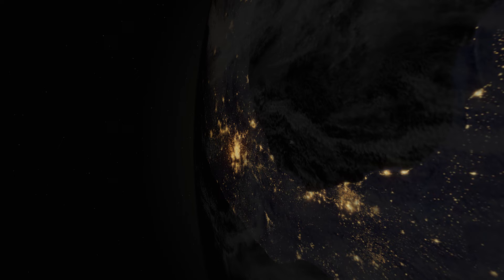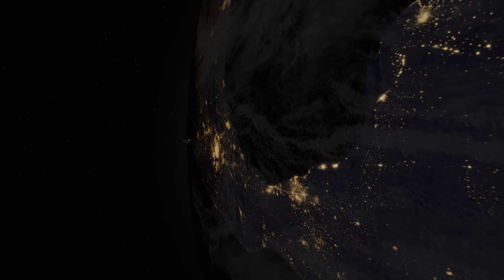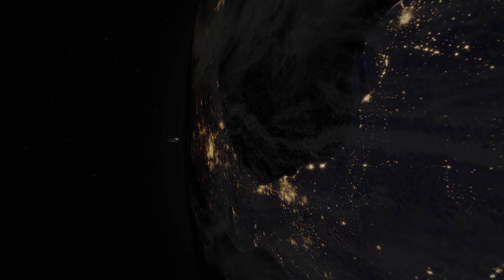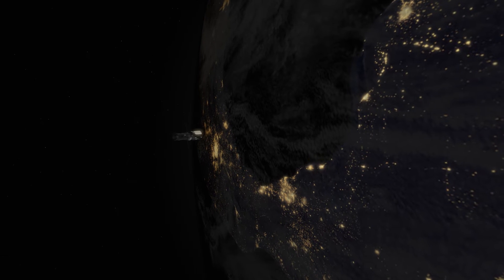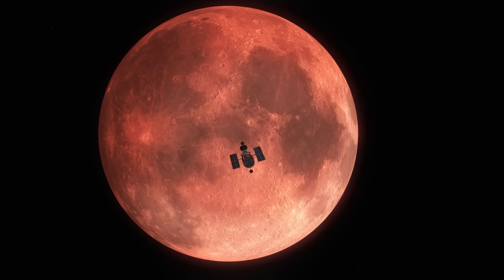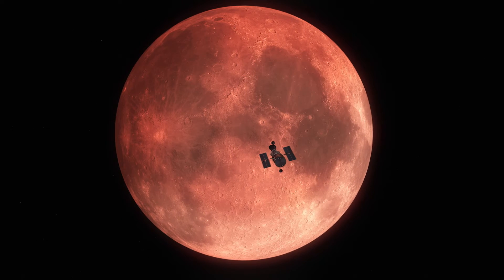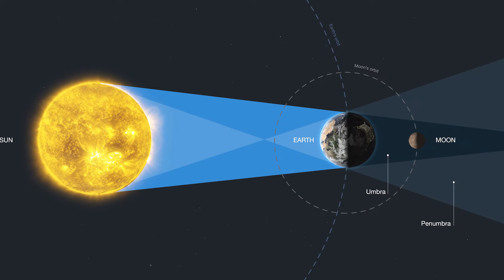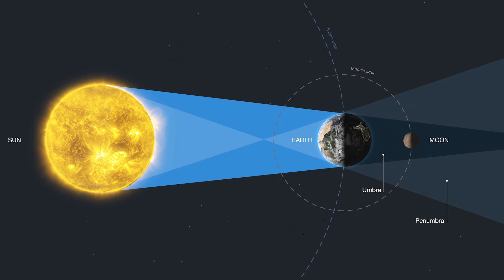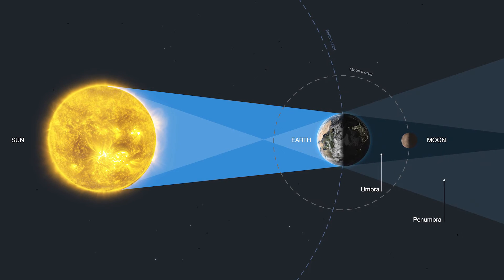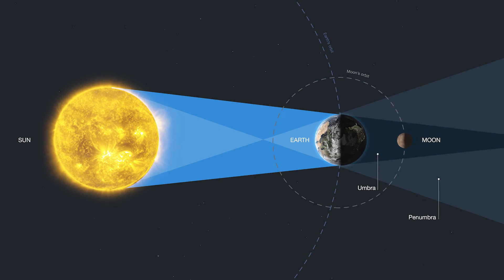For example, during the lunar eclipse of January 2019, astronomers used Hubble for a special spectrographic experiment that tested how they will observe Earth-like planets around other stars in the search for life in the future. Our planet's perfect alignment with the Sun and Moon during a total lunar eclipse mimics the geometry of a transiting terrestrial planet with its star.